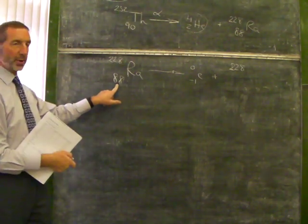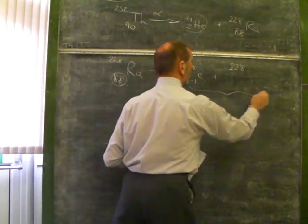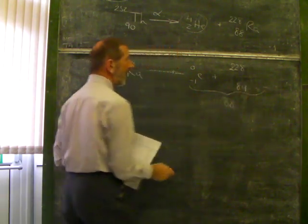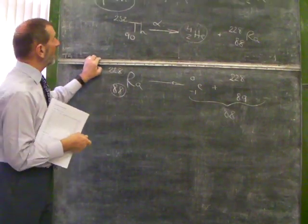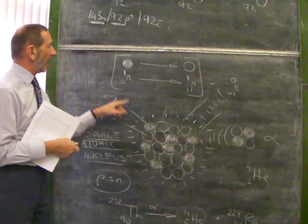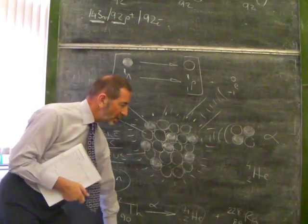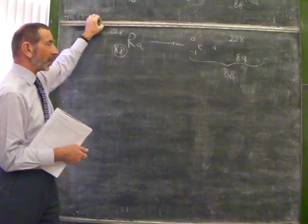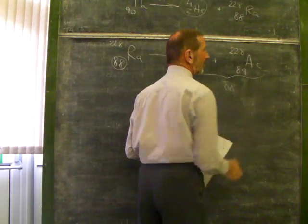But what about charge? The total charge here is 88. The total charge here will also have to come to 88, meaning this will have to be 89. Why? What's happening here? We've created an extra proton. Remember, we said earlier on a neutron has become a proton. There's now one extra proton. It's no longer the 88th element but the 89th element. And the 89th element is actinium.